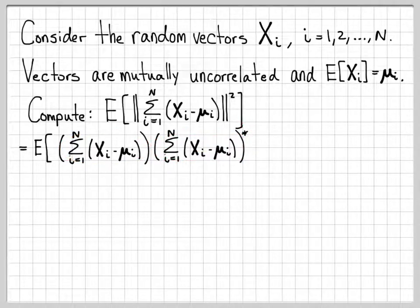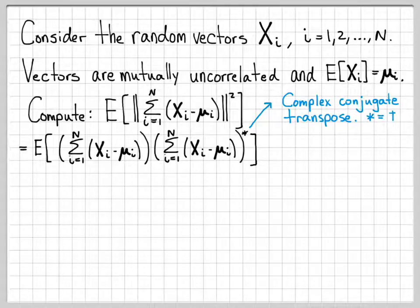This little star means complex conjugate transpose, which means take the conjugate and take the transpose. Some books use a dagger symbol, some books use the star symbol. But conjugate transpose is what that operation means.